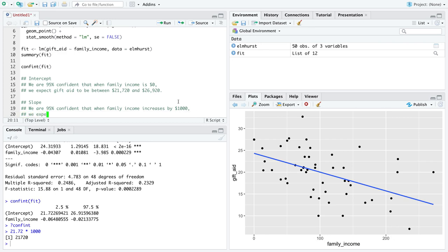We expect gift aid to decrease, notice they're both negative, by between 0.02, let's just help ourselves right off the bat, and I'm going to round to decrease by between $21.